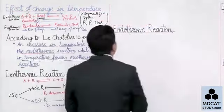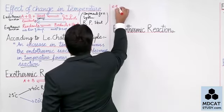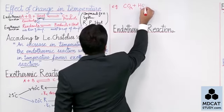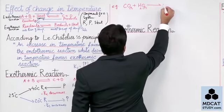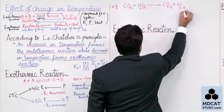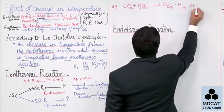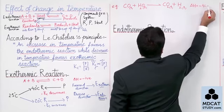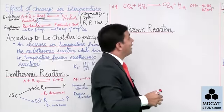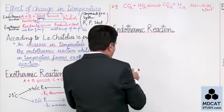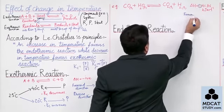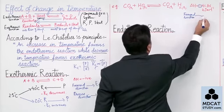Now my dear student, I have this reaction: carbon monoxide in gaseous state, when treated with steam in gaseous state, forms carbon dioxide CO2 (gas) along with hydrogen gas. If you look at its delta H value, it is minus 41.84 kilojoules. This is a reversible reaction, and delta H negative means forward reaction is exothermic.